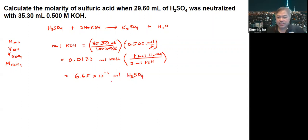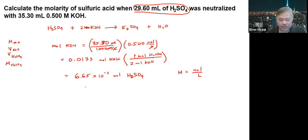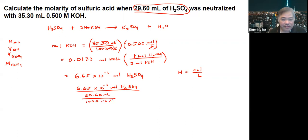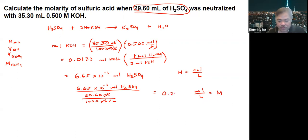What we are being asked for is the molarity, and molarity is defined as moles over liters. We're given the volume of sulfuric acid that was used, so we divide: 6.65 times 10 to the negative 3 moles of sulfuric acid divided by 29.6 mL, then divided by 1000 to convert to liters. The units give you moles over liter, which is molarity, and the answer is approximately 0.225 molar.